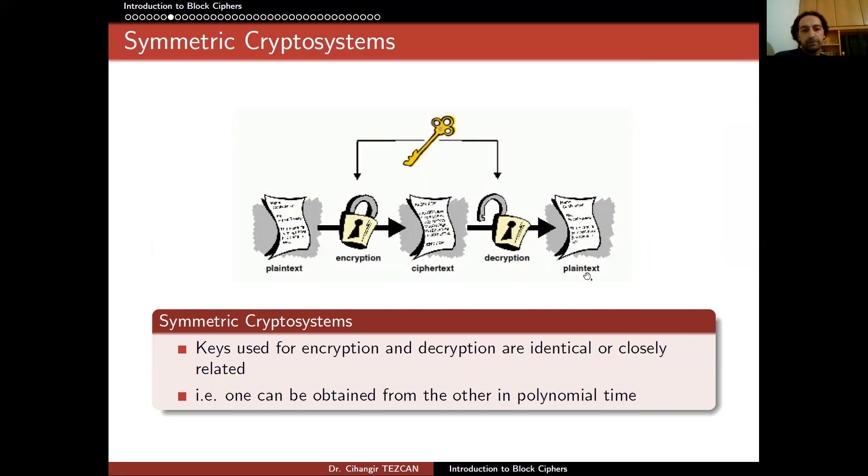In symmetric cryptosystems, we have a secret key. And keys used for encryption and decryption are identical or they are closely related. In other words, one can be obtained from the other in polynomial time. In asymmetric key cryptography, we will have two keys. One is secret and one is public. Public can be used for encryption and the secret one will be used for decryption and so on.